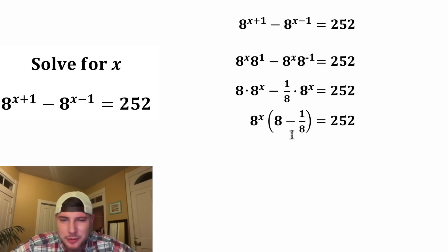Now let's focus on the inside of the parentheses. In order to subtract these two terms, we need to give them a common denominator. Let's rewrite this 8 as 64 over 8. 64 over 8 minus 1 over 8 is 63 over 8. Then we can smush everything together.